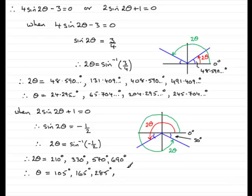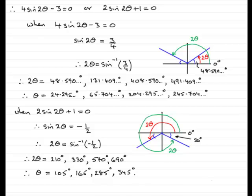And 690° ÷ 2 = 345°. So the exact answers from the second factor are θ = 105°, 165°, 285°, 345°. You can round the decimal answers from the first factor to whatever accuracy you like. That brings us to the end of this example — I hope you've been able to follow that.